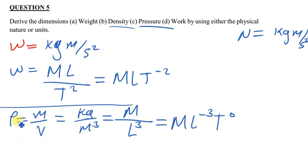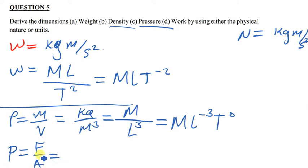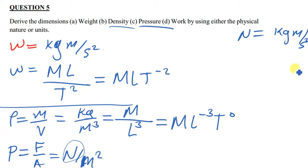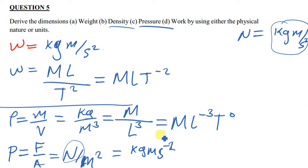Let's move on to pressure. Pressure is found in a similar way. The units for pressure are simply just a Pascal, and one Pascal is simply just force over unit area. So one Pascal is equivalent to a Newton per meter squared. One Newton is kg·m/s², which can also be written as kg·m·s⁻², divided by m².